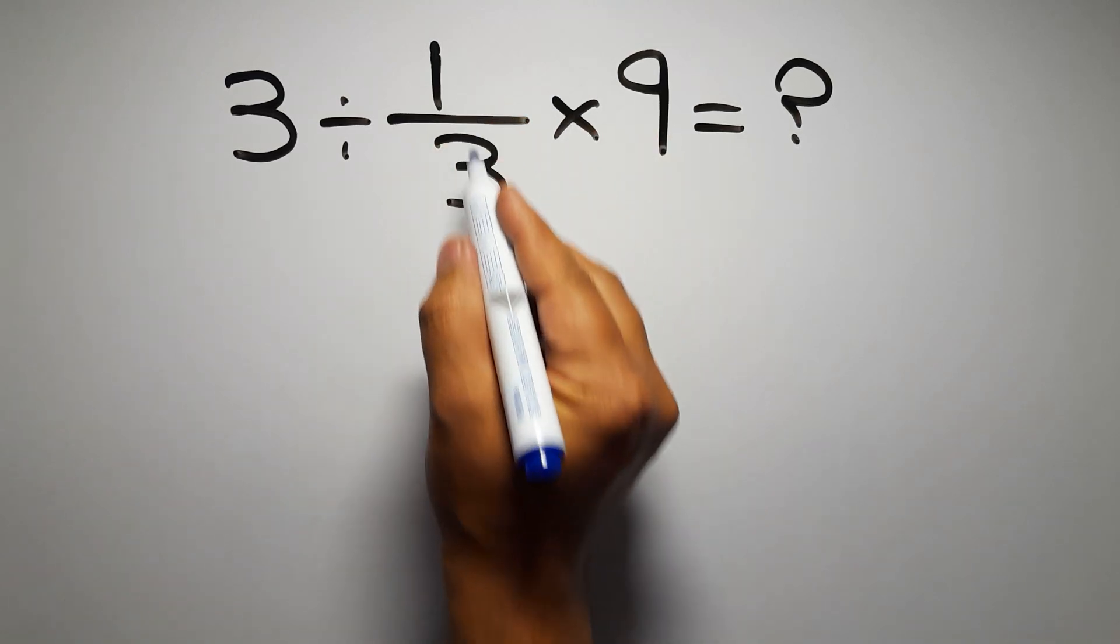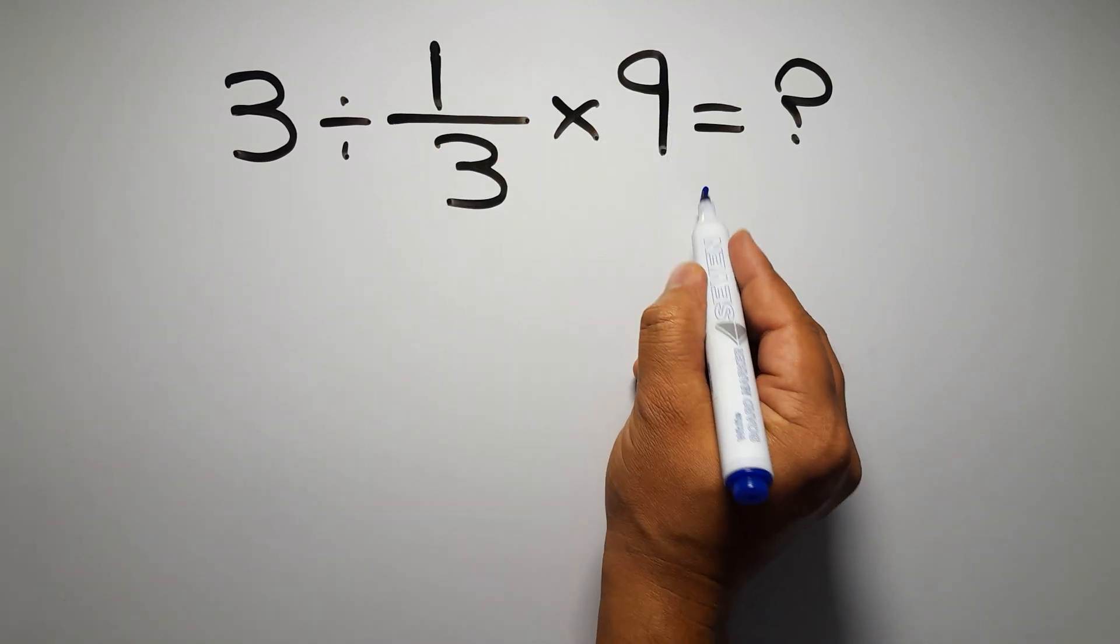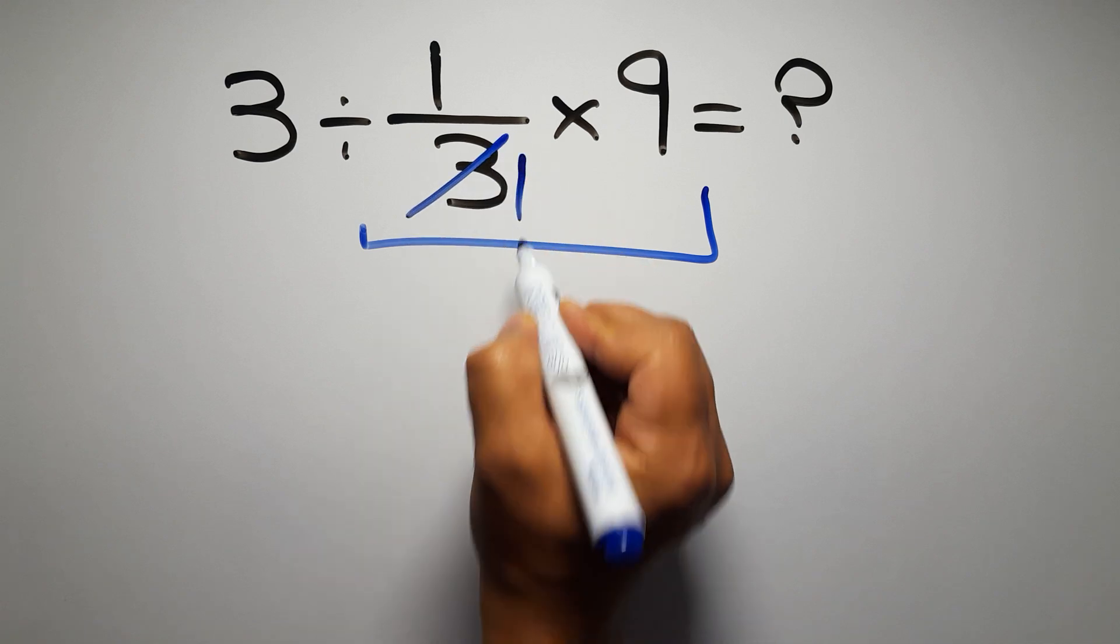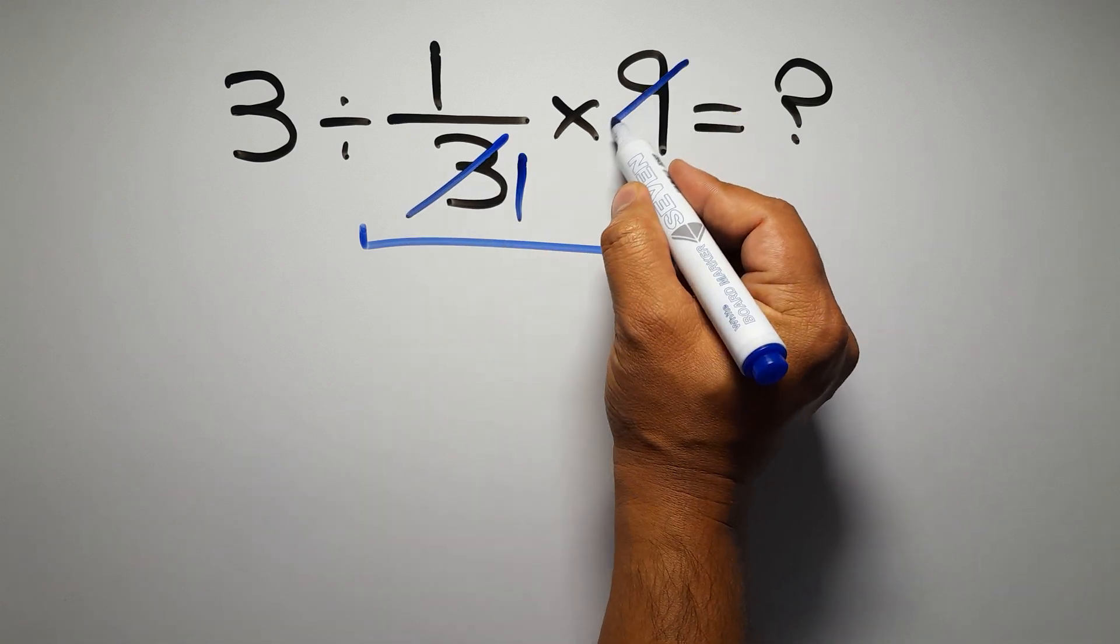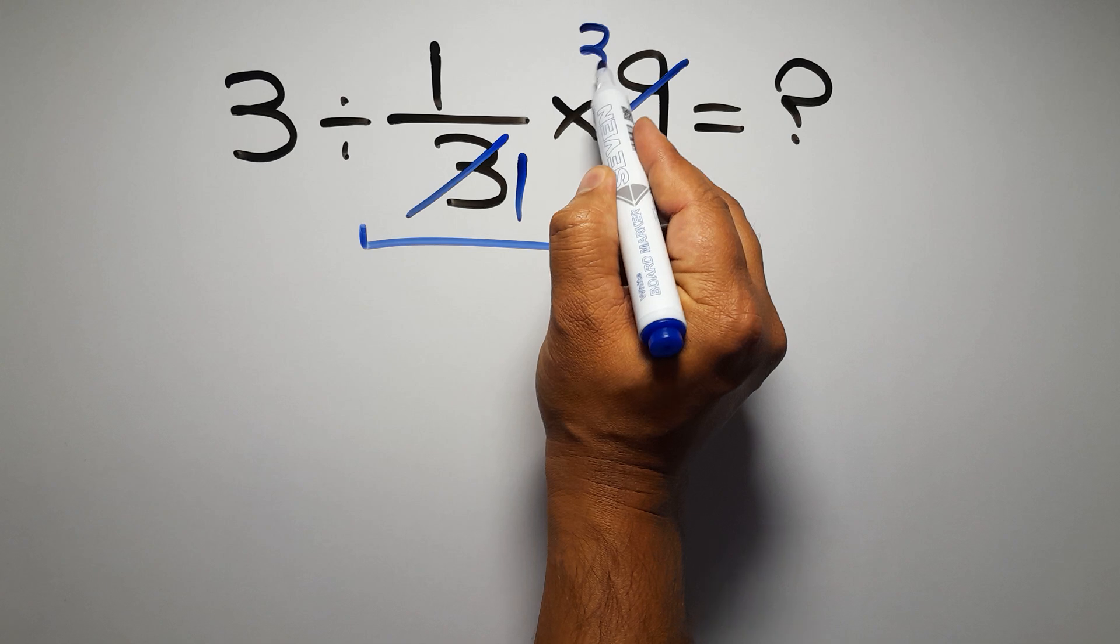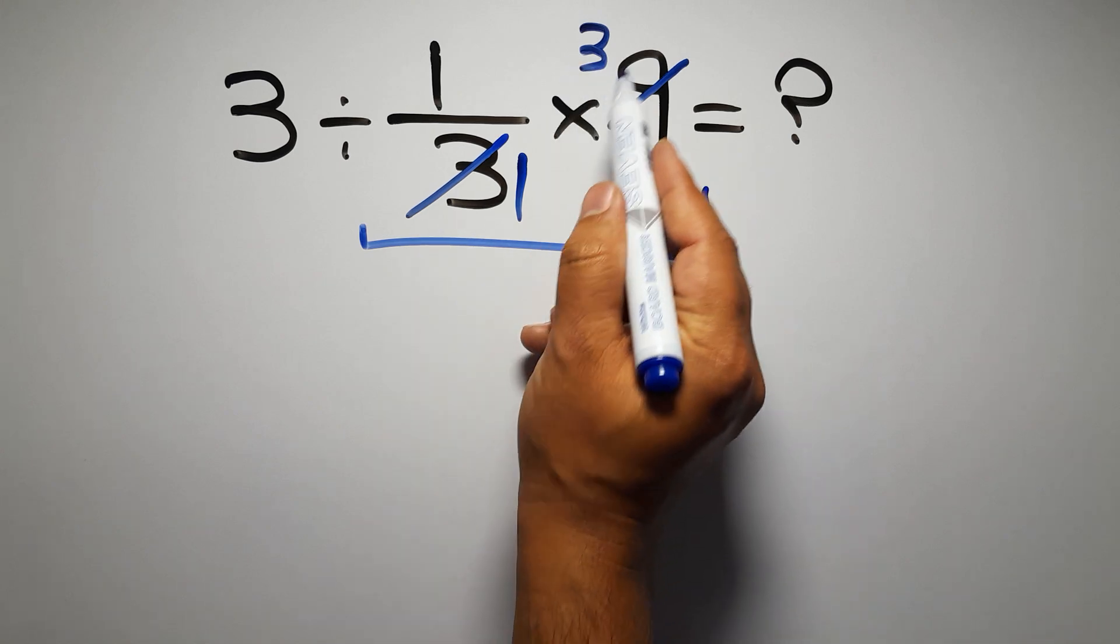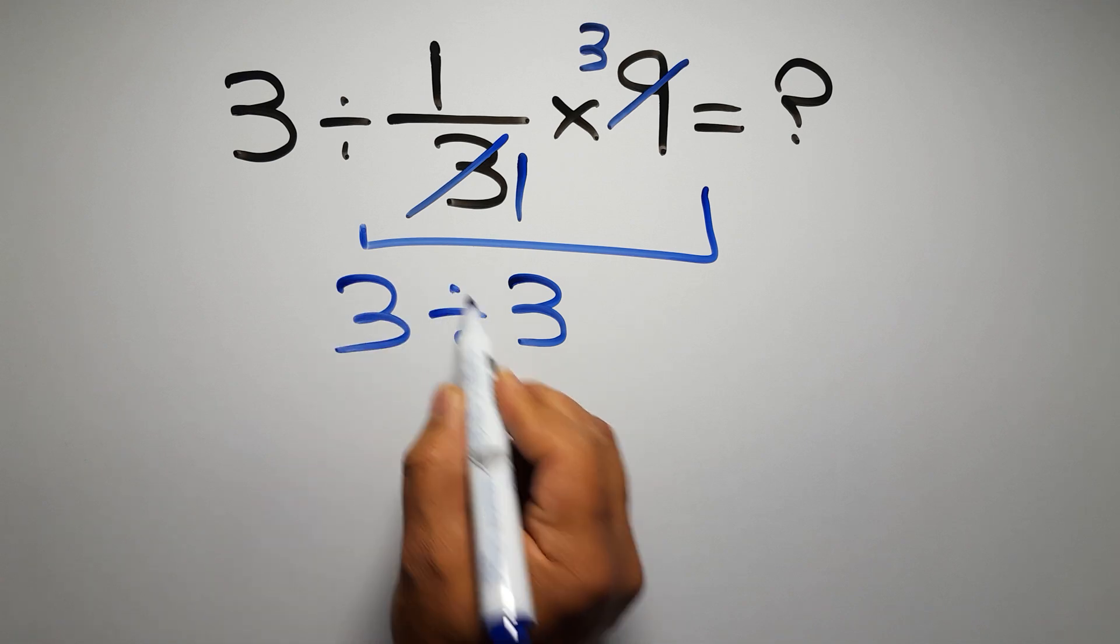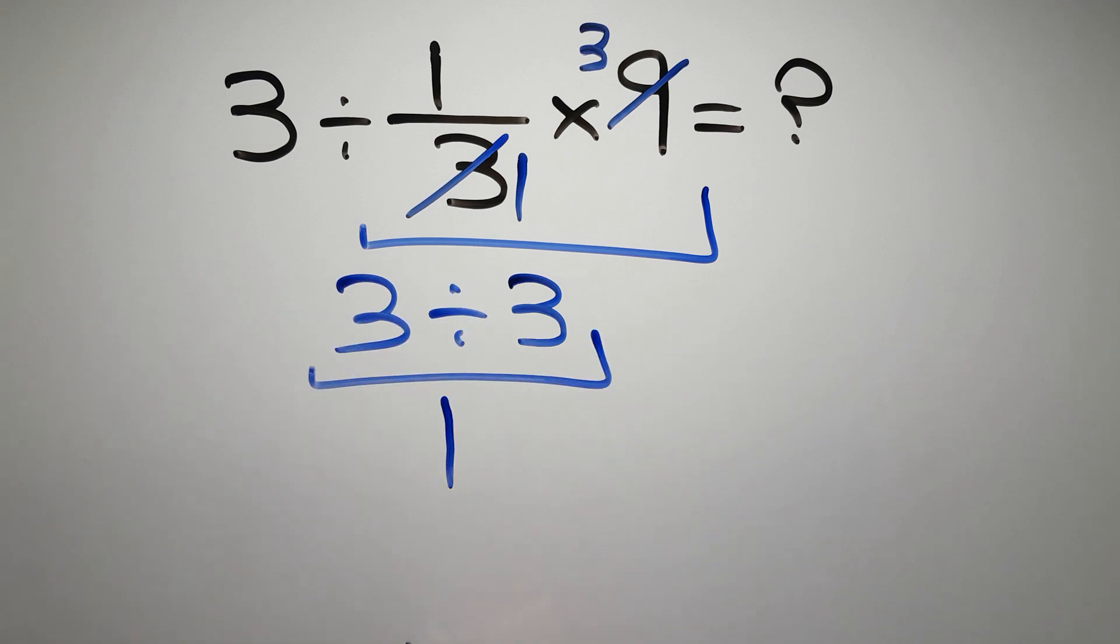First we do this multiplication: 1 over 3 times 9. 3 divided by 3 gives us 1, and the 9 divided by 3 gives us 3. So here we have just 3, and 3 divided by 3 equals 1.